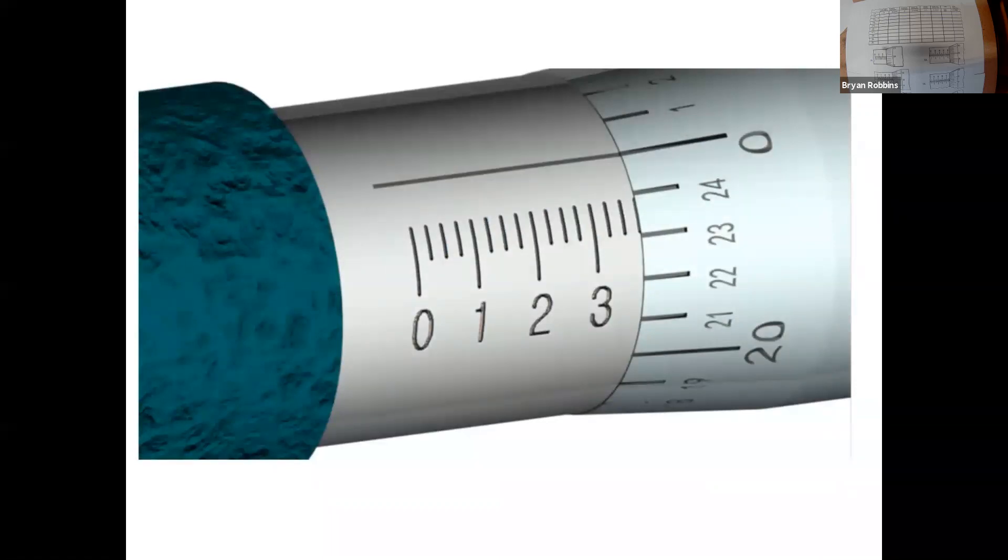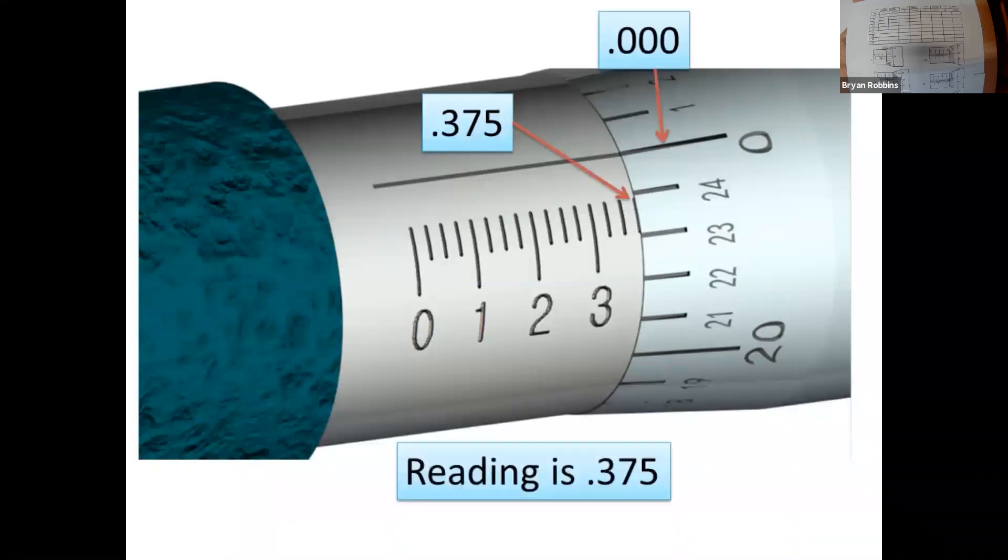Now, let's look at a reading on here. This mark that you see there tells us that we're at .3, and then .325, .350, and .375. So, that mark represents .375. The reading from the thimble scale is zero. So, we don't add anything to the .375, and so the reading is .375.